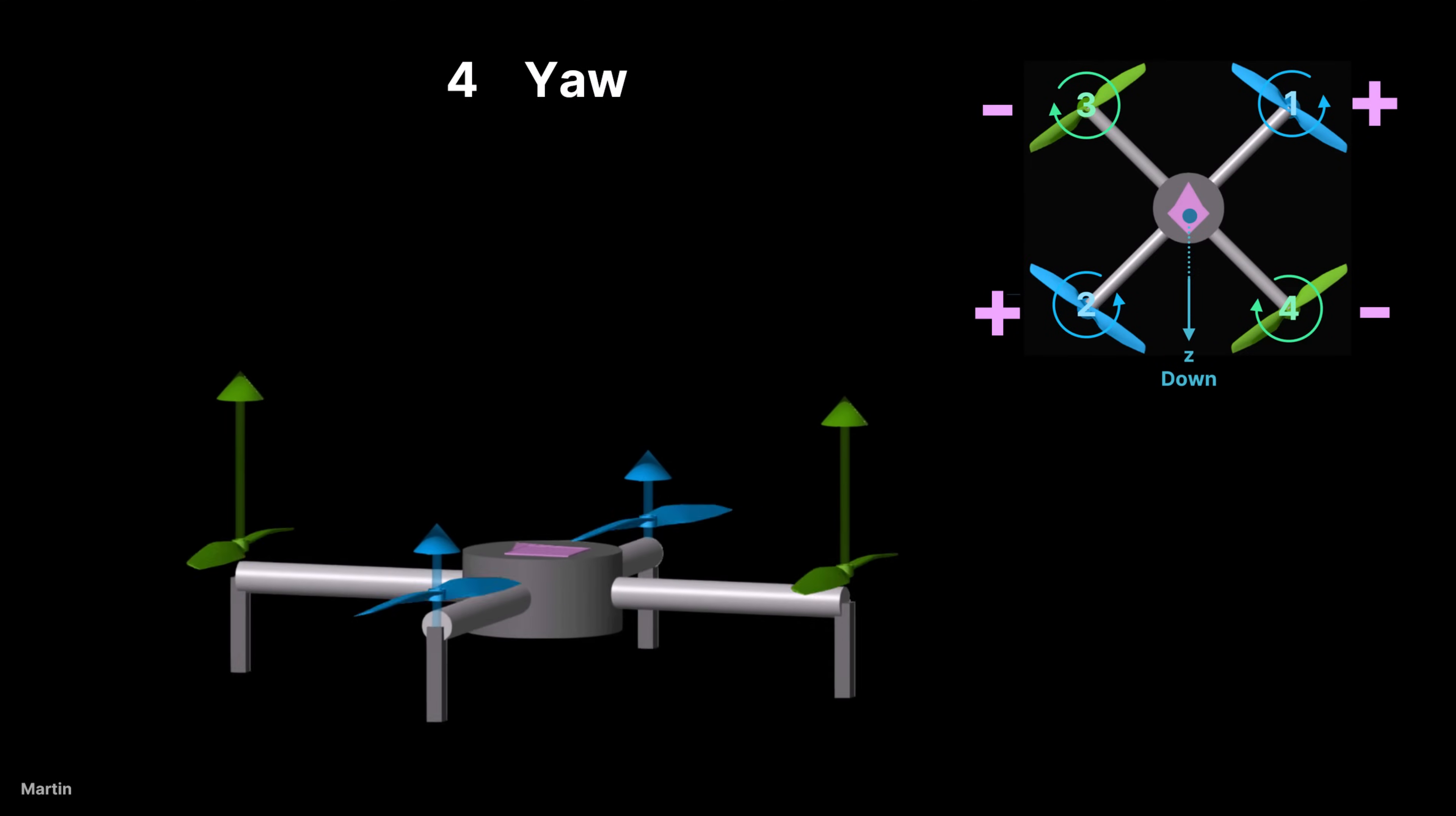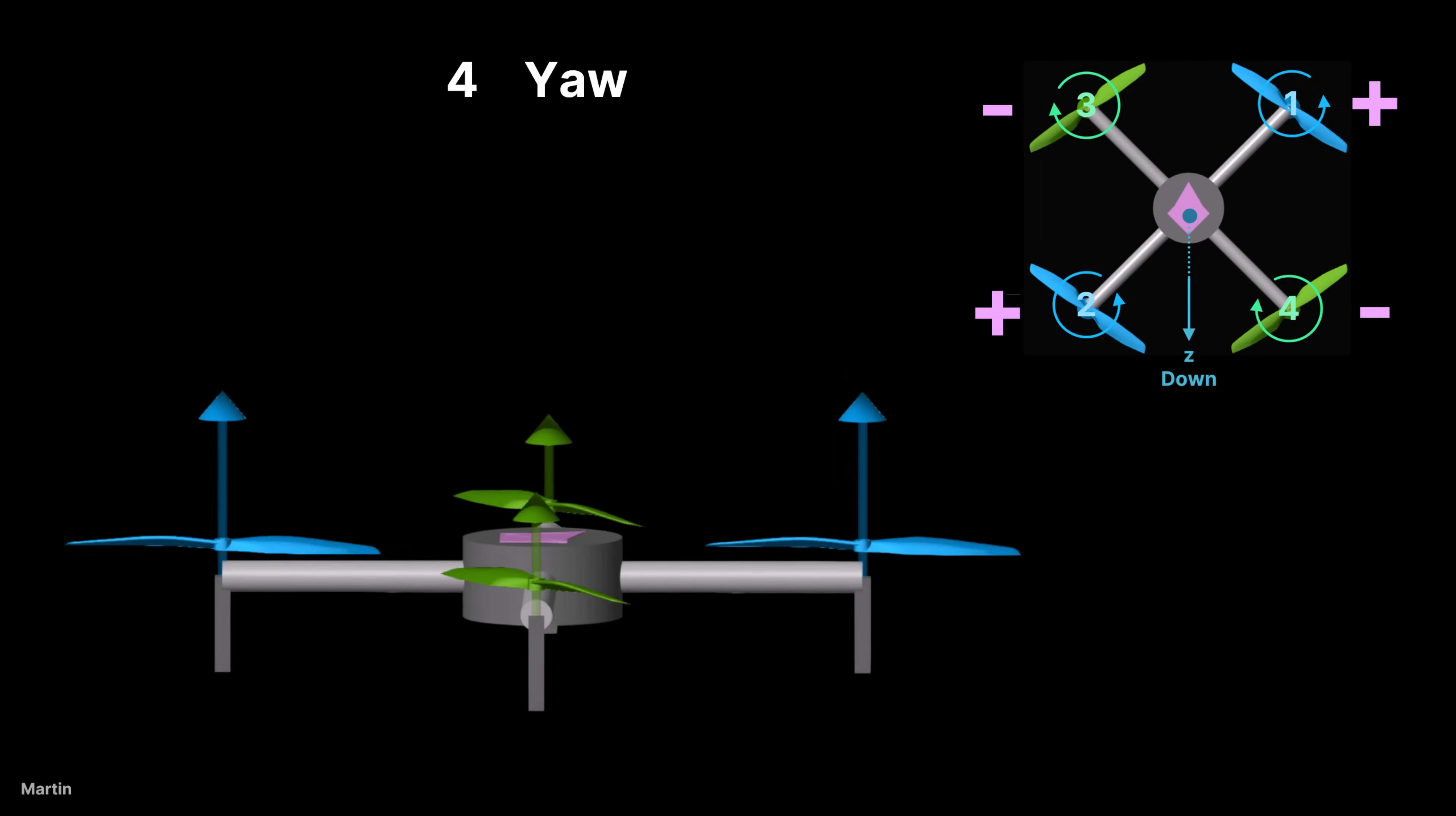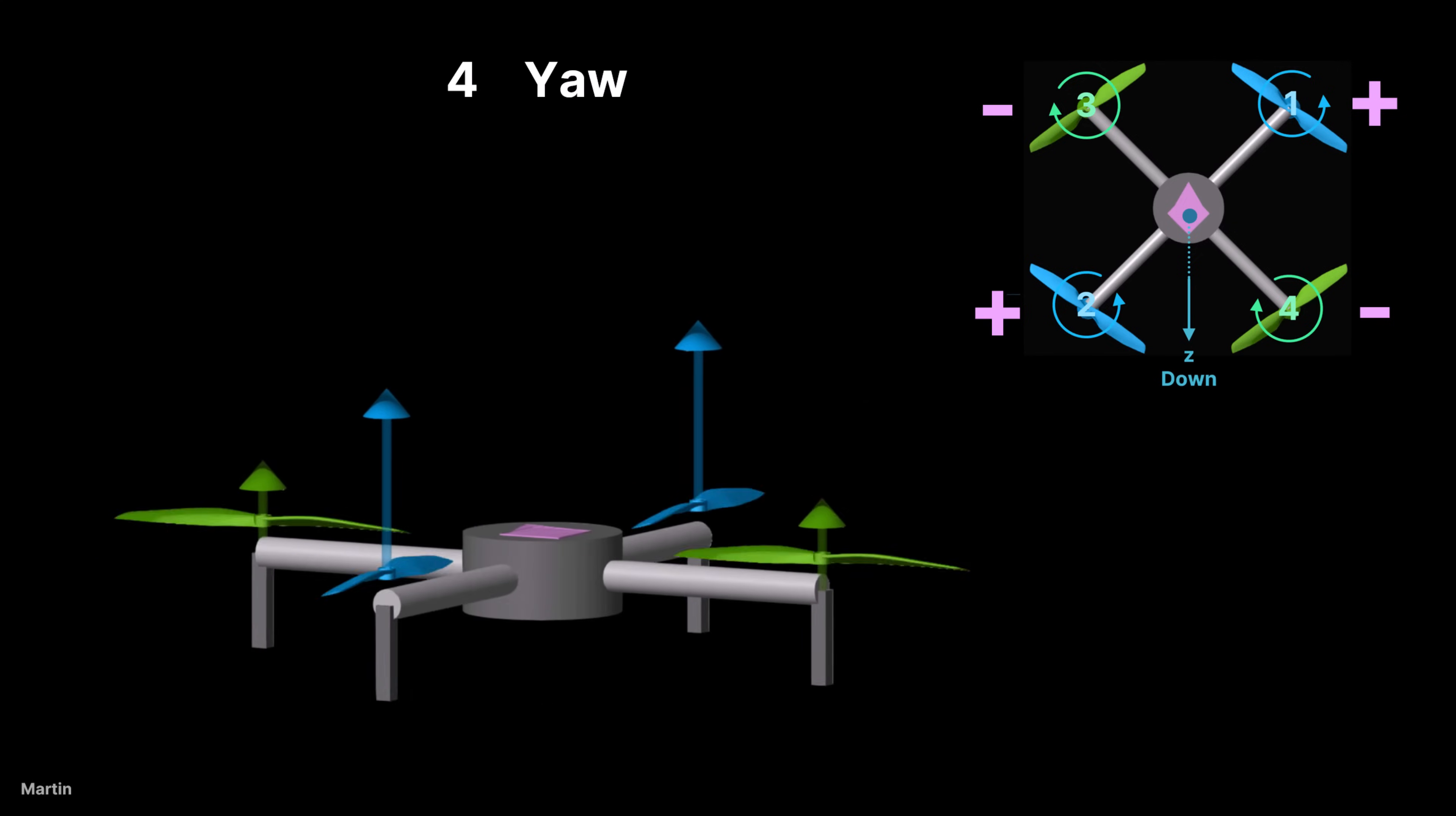Yaw controls the rotation around the z-down axis. In a standard quadcopter, two propellers spin clockwise and two spin counterclockwise to balance torque. To rotate right, decrease the speed of the clockwise propellers and increase the speed of the counterclockwise propellers. To rotate left, do the opposite.